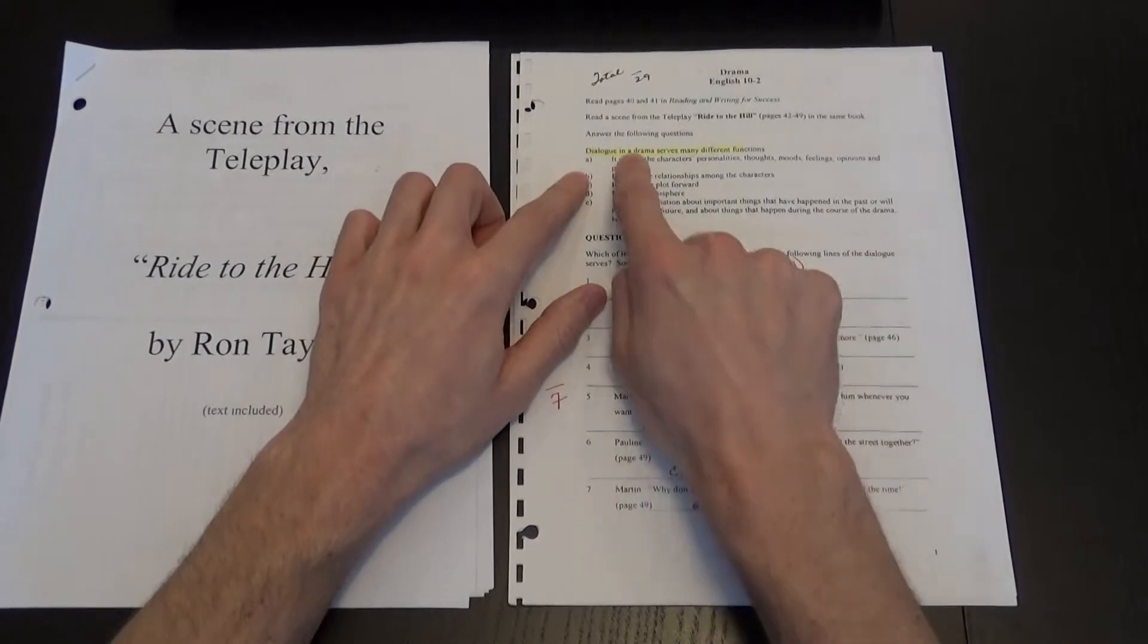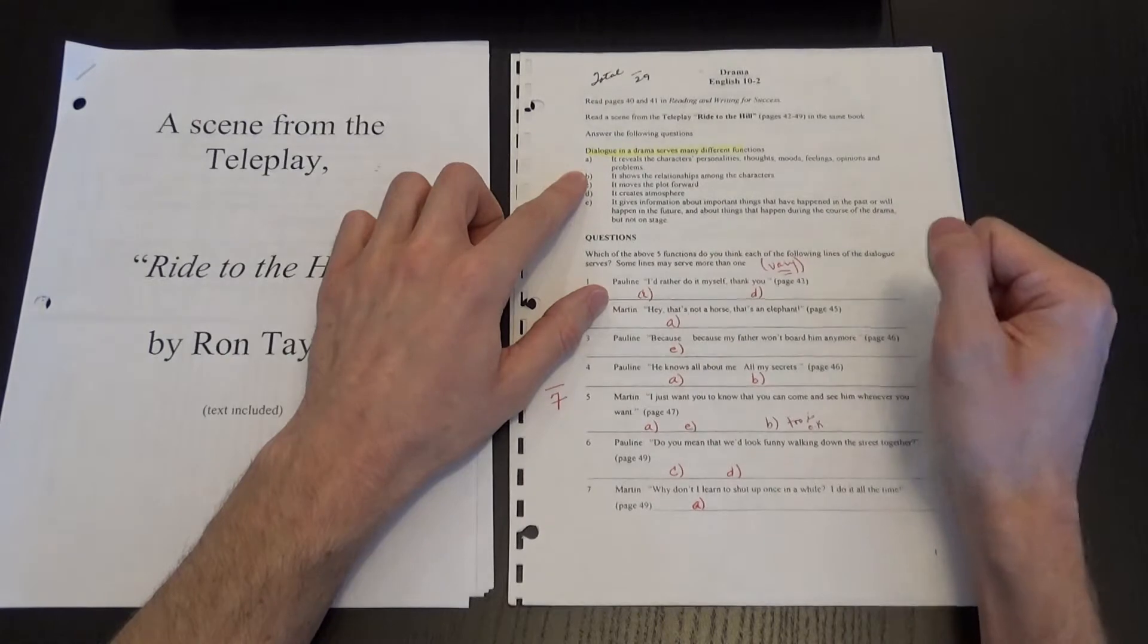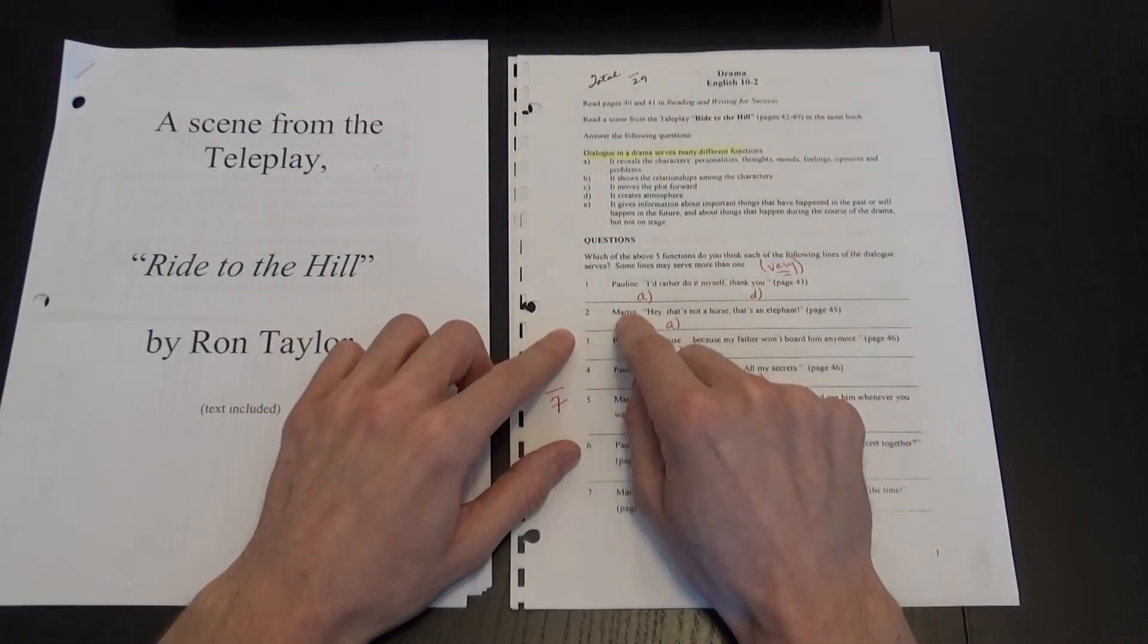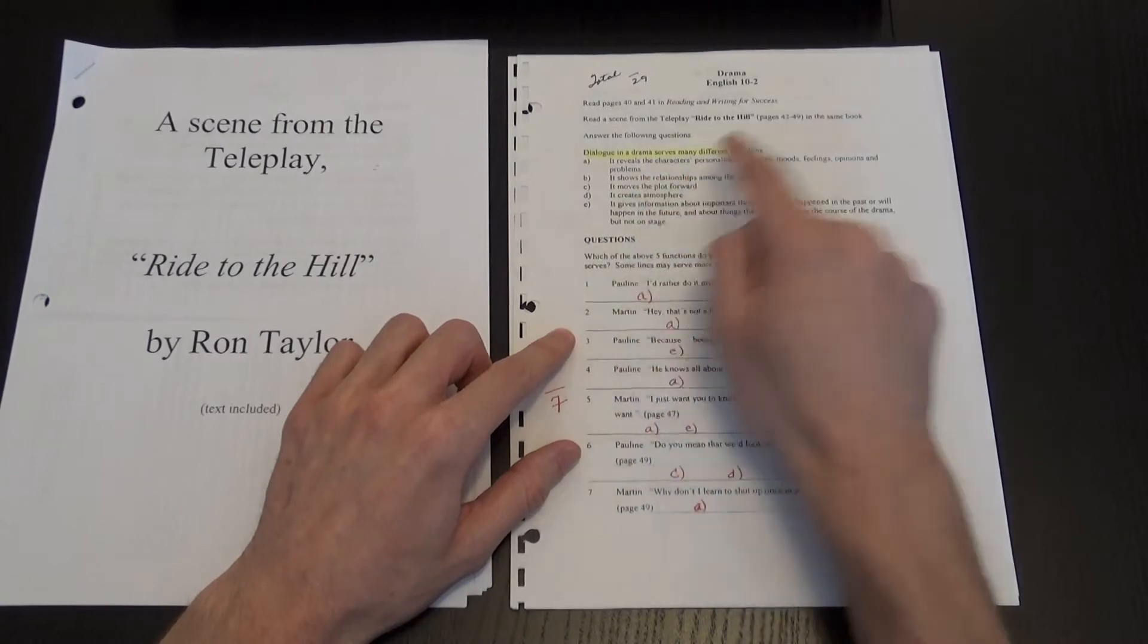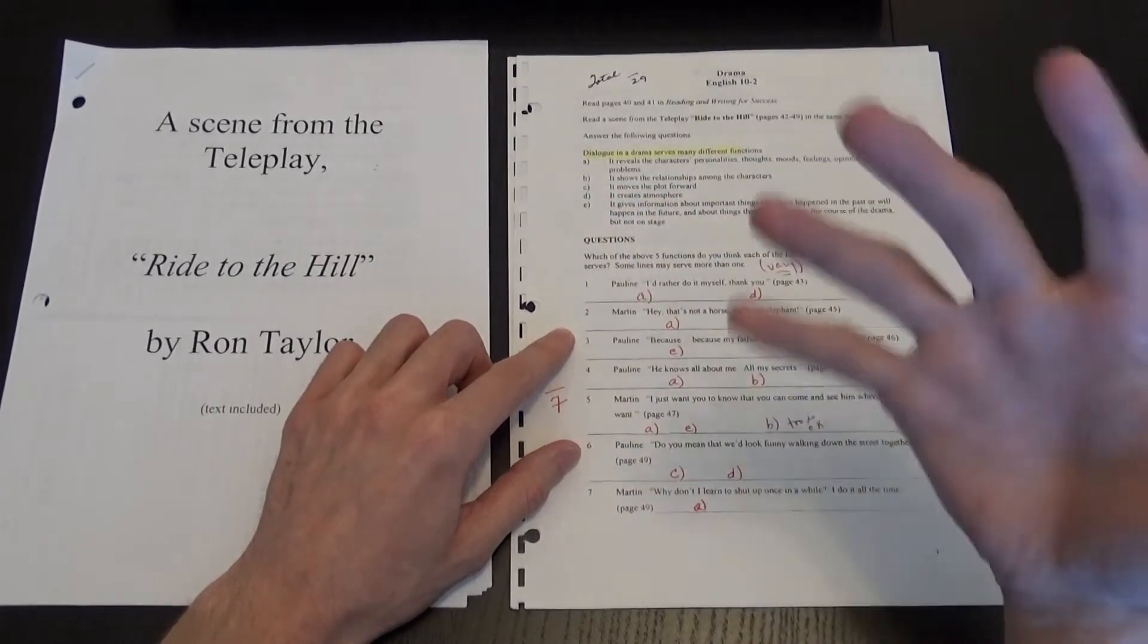So that was A, so it reveals a character's personalities, thoughts, mood, feelings, opinions, and problems. So she's kind of upset with Martin, so it reveals her character. And then we have D, it creates atmosphere, the fact that she's upset.